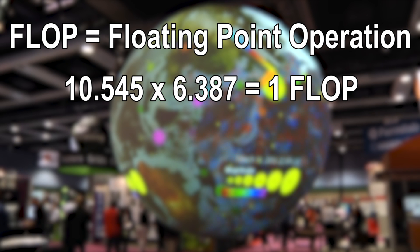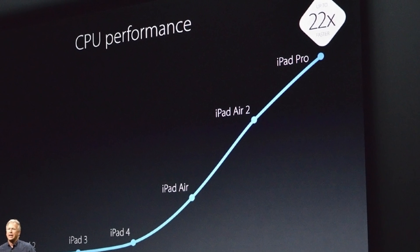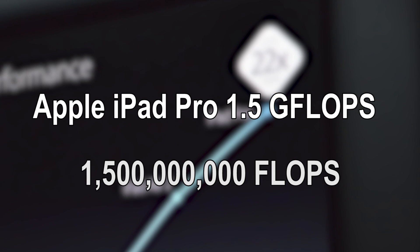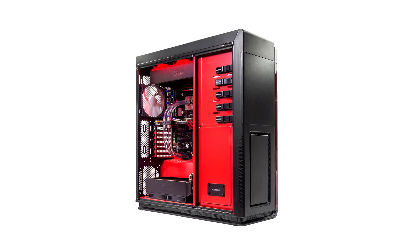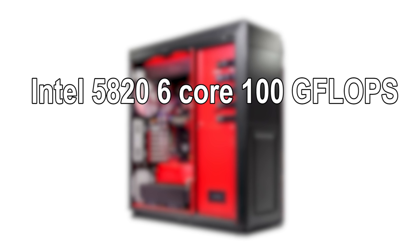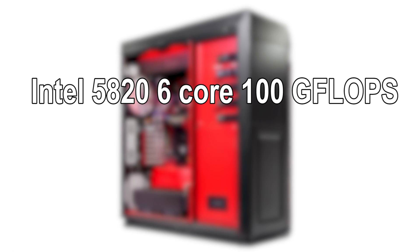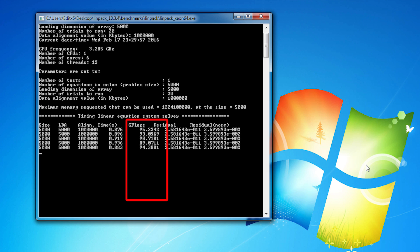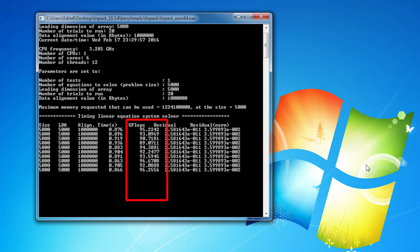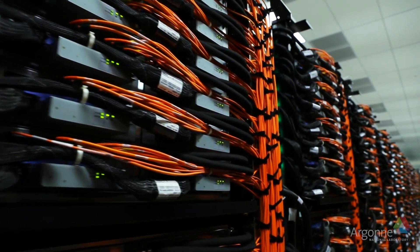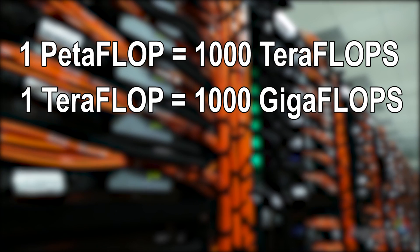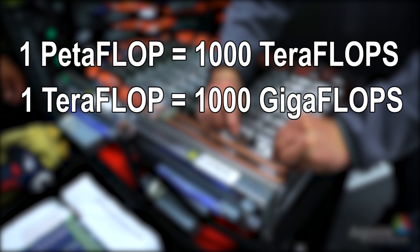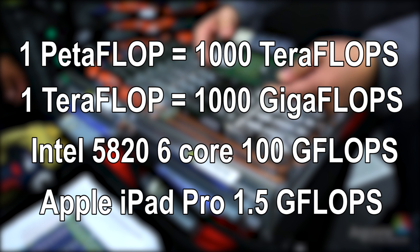Modern computers can do this billions of times a second. At the time of making this video in February 2016, the latest iPad Pro with the A9X dual-core CPU is capable of around 1.5 gigaflops — that's one and a half thousand million flops per second. A typical $1,000 PC with a single Intel 5820 6-core CPU is capable of around 100 gigaflops, that's 66 times more than an iPad Pro. Because supercomputers are so much more powerful, they are measured in petaflops. One petaflop is equal to 1,000 teraflops, and one teraflop is equal to 1,000 gigaflops — remember our PC was 100 gigaflops and the iPad Pro 1.5 gigaflops.